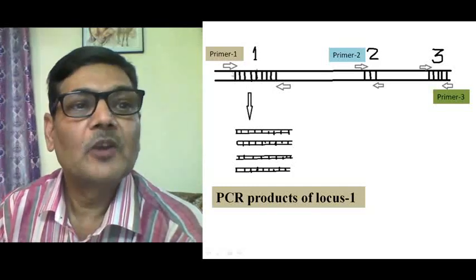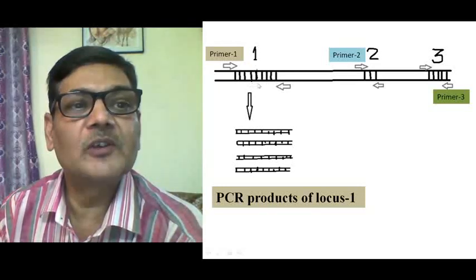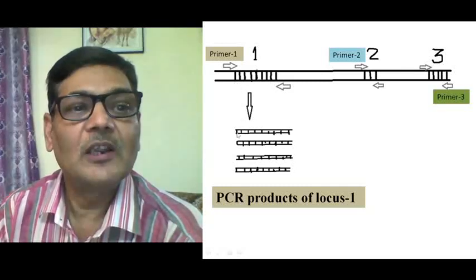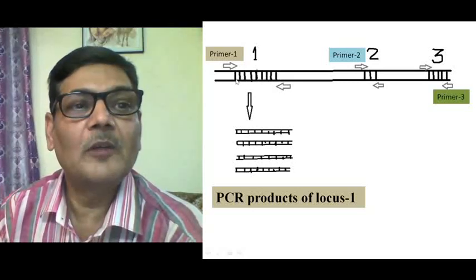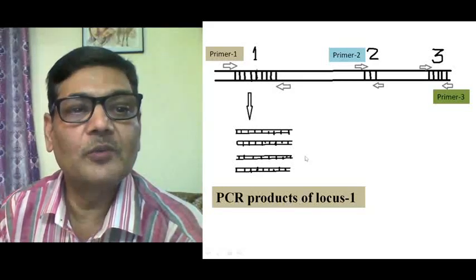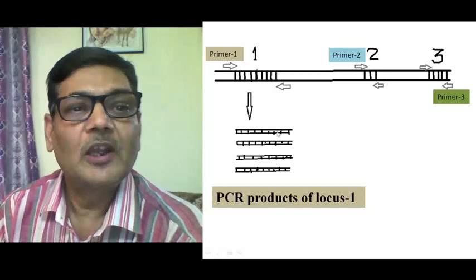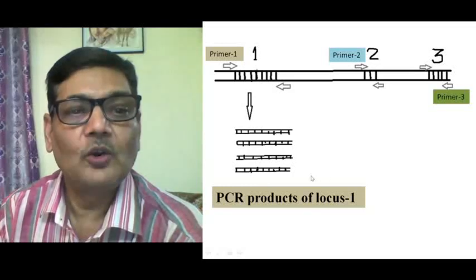Suppose we are using primer 1. By using this primer we are actually getting many copies of this microsatellite — this specific segment is now amplified. These are many DNA segments which have been obtained from this microsatellite segment. So this is the PCR product of locus 1. This way we can get the PCR product of a specific locus.